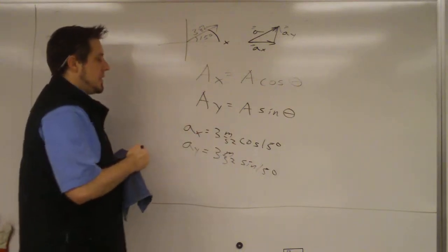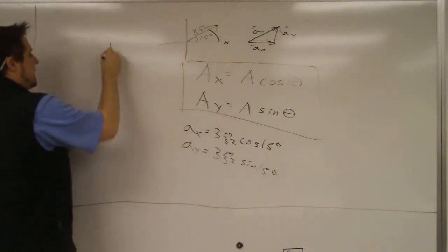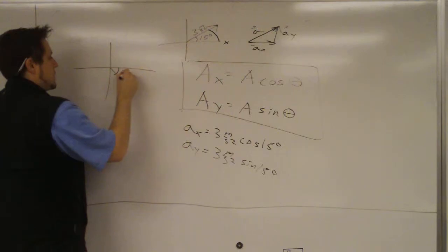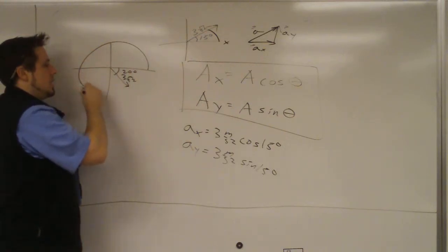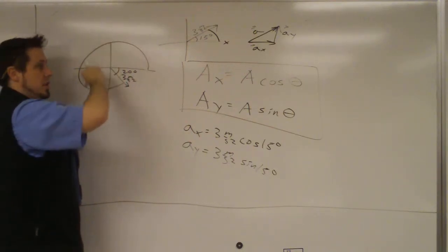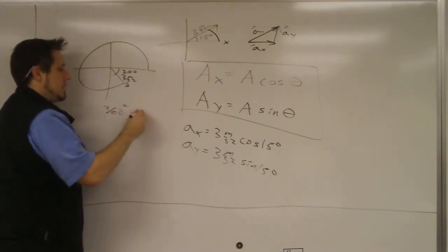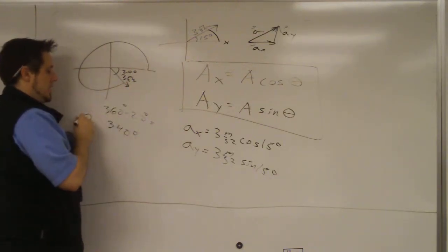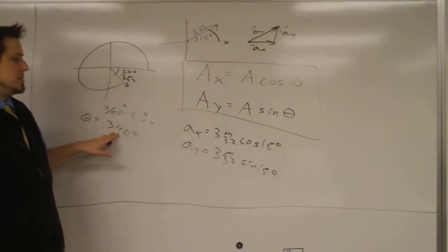That's the automatic way — all you need to know is the formula and how to get theta. For example, if the vector was pointing like this and 20 degrees was given below, you can't use the 20 directly. You start at the positive x-axis and go counterclockwise all the way around — that's 360 degrees — then subtract 20, giving you a theta of 340 degrees.